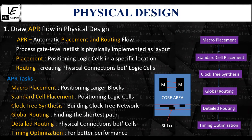The next stage in the APR flow is global routing. It is the process where the tool divides the entire core area into global routing cells and tries to find the shortest path to connect the cells in the chip layout.